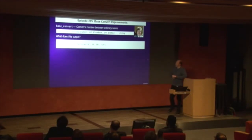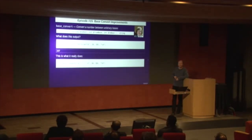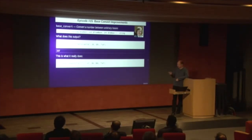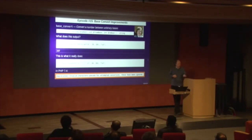Anyone want to guess what this script outputs? It returns 237. Because what it really does is strip out anything that isn't part of base 16 — the E and the D in hexadecimal is 237. PHP is something, huh? In PHP 7.4 you will now get a deprecation warning saying that invalid characters were passed for attempted conversion and have been ignored. In PHP 8 it will likely start throwing exceptions, so please pay attention to this.